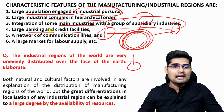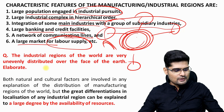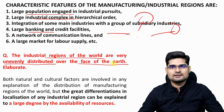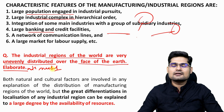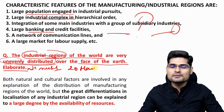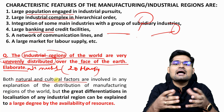Here's a practice question: 'Industrial regions of the world are very unevenly distributed over the face of the earth — elaborate with suitable examples.' If you know the answer, write it in the comment box below. Think about it as a 20-mark UPSC question. Both natural and cultural factors matter — it's a combination of factors, not just availability of land or resources, that makes an industrial hub.